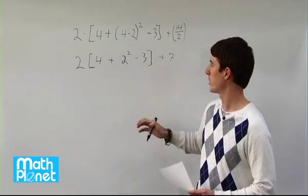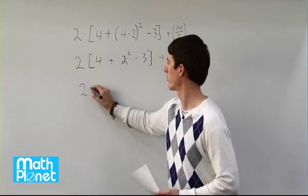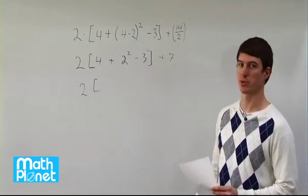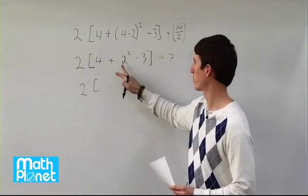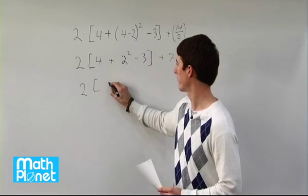Now we can simplify this and have brackets that we can multiply by 2. We still have the 2 out front, brackets 4 plus, 2 to the power of 2 is 2 squared, which is 4. So 4 plus 4 is 8, and 8 minus 3 is 5.